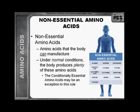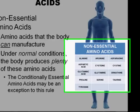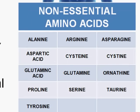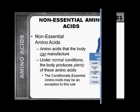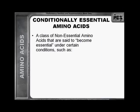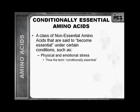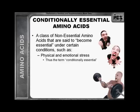The non-essential amino acids are amino acids that the body can manufacture. Under normal conditions, the body produces plenty of these amino acids. The conditionally essential amino acids may be an exception to this rule. They are a class of non-essential amino acids that are said to become essential under certain conditions, such as physical and emotional stress, thus the term conditionally essential.